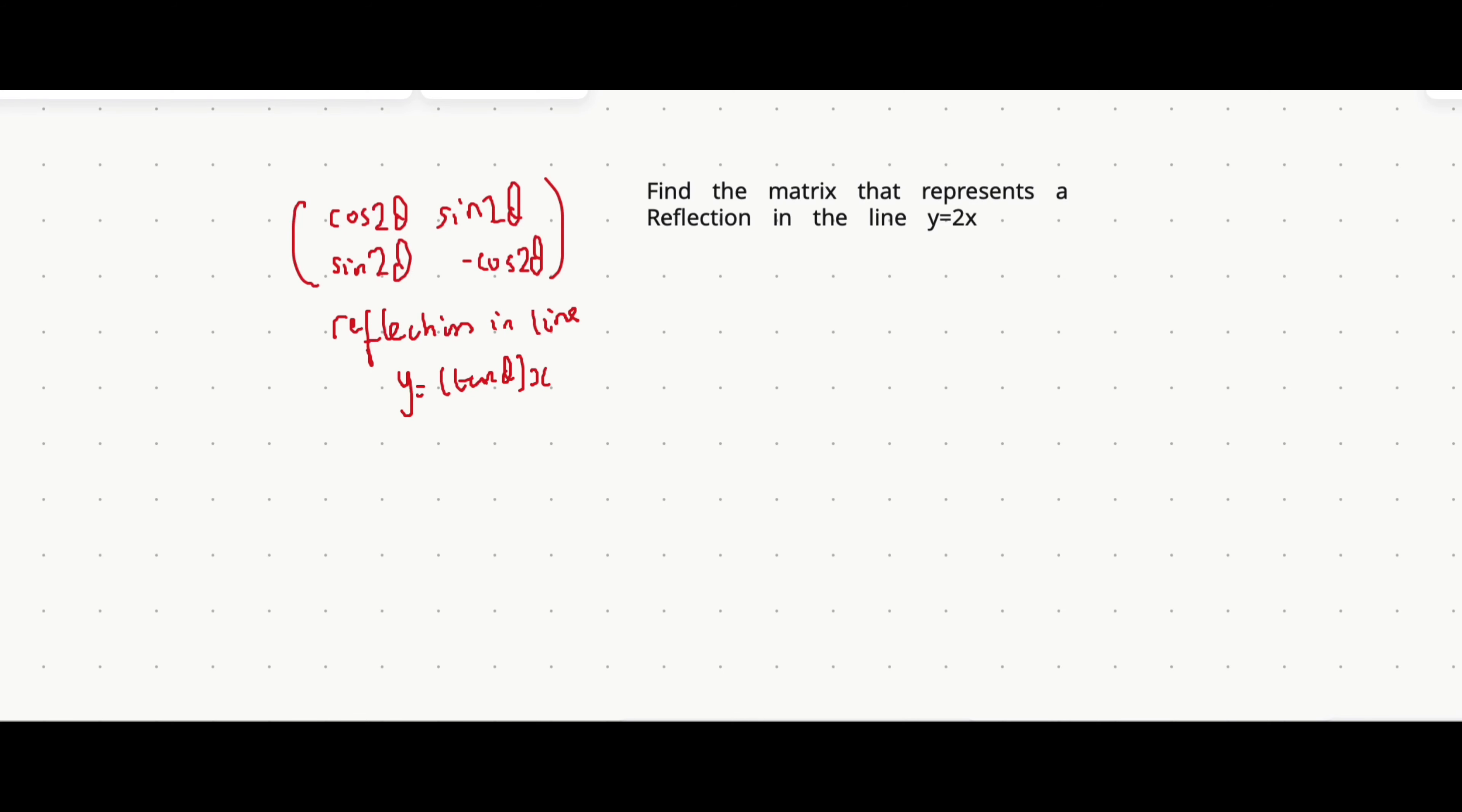In matrix transformations in A-level further maths, there's a specific type of question where it gives you the equation of a straight line and you want to find a matrix that represents a reflection in that straight line.